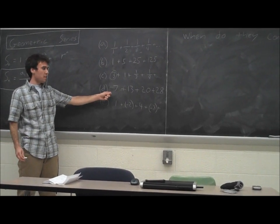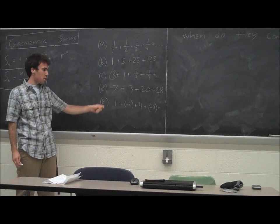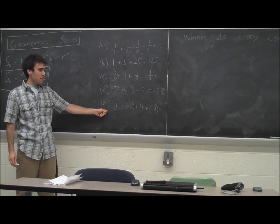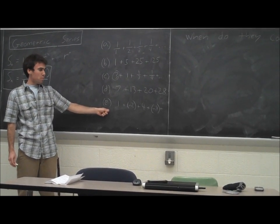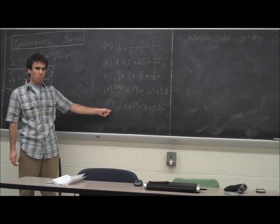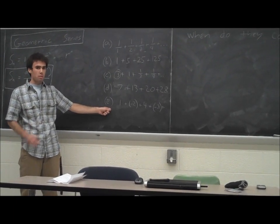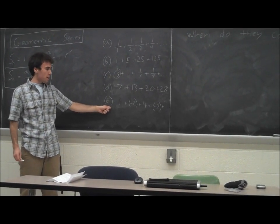In D, we can again see that that's not the case. We're not multiplying by a common ratio. And in E, we can see it's a little bit tricky because we are multiplying by a common ratio, but that common ratio isn't positive. That's fine. In this case, it would be a negative 2.